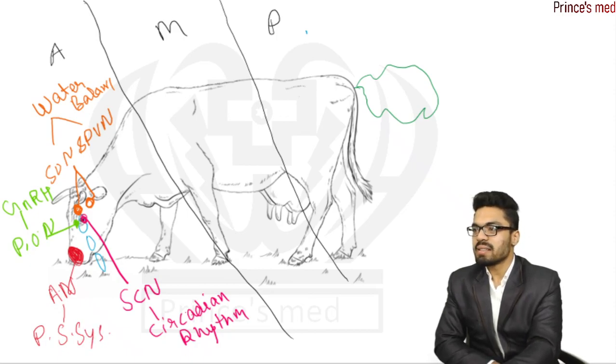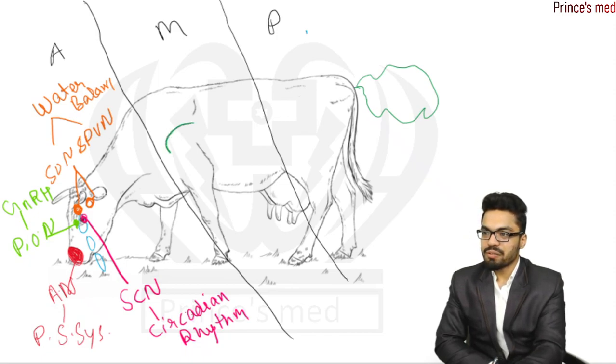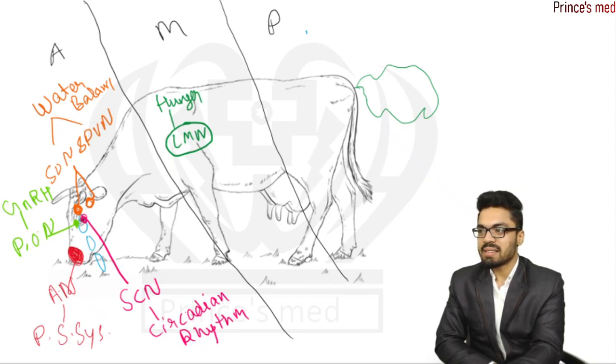And next in the medial group, first of all lateral medial nucleus has function of hunger, as it is near the stomach so function is hunger.